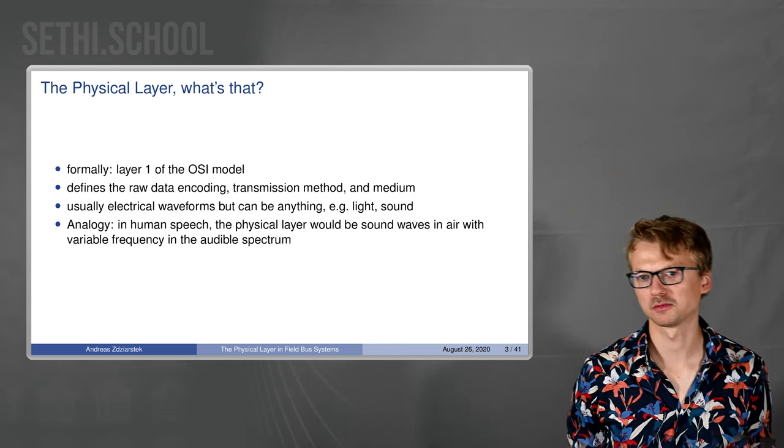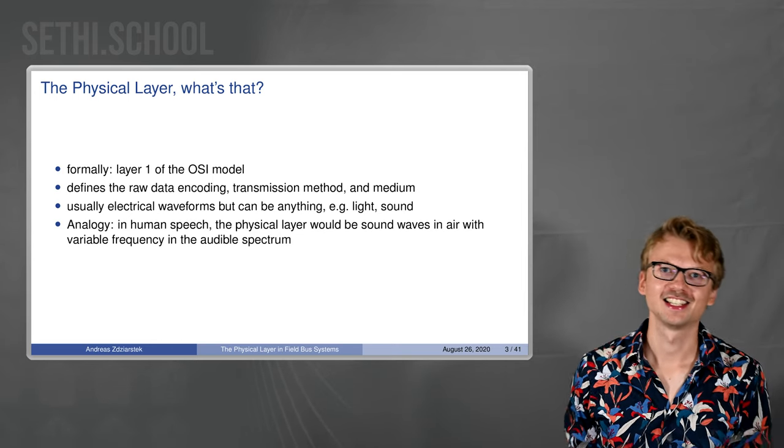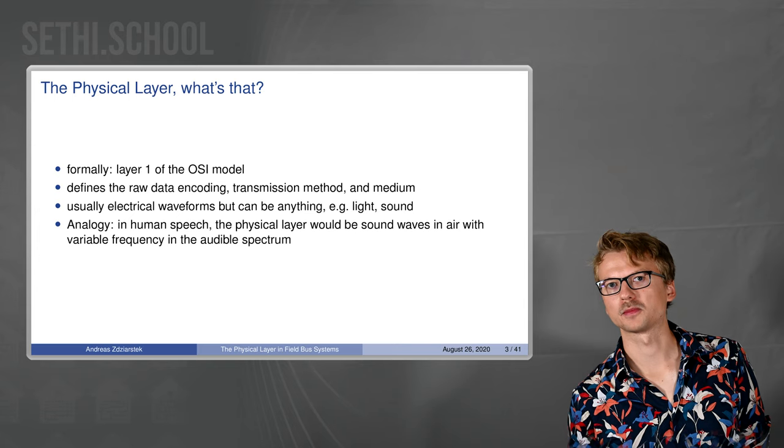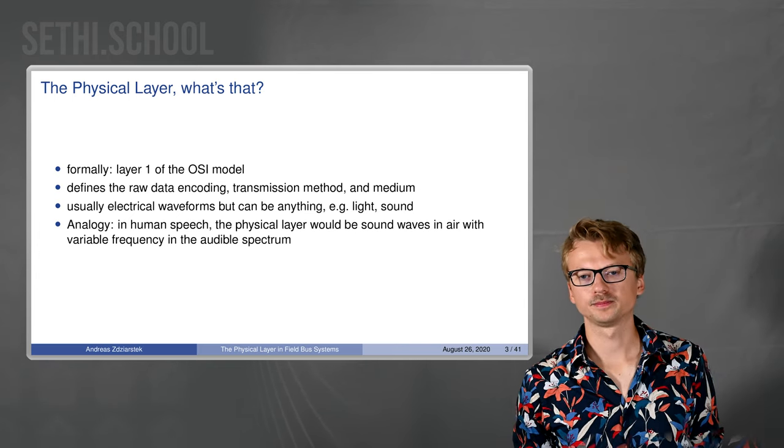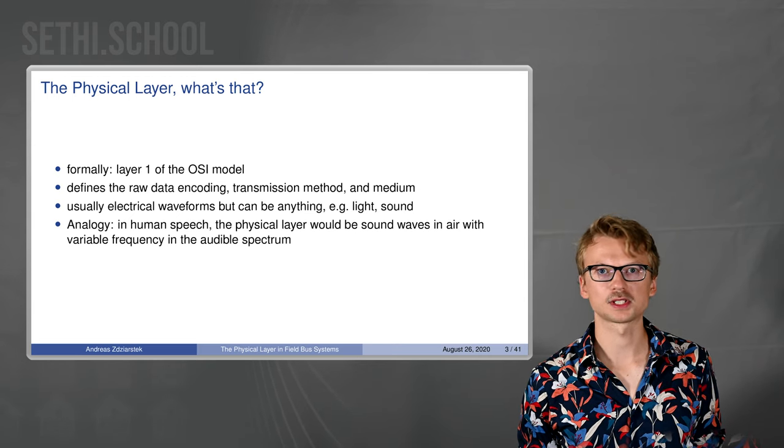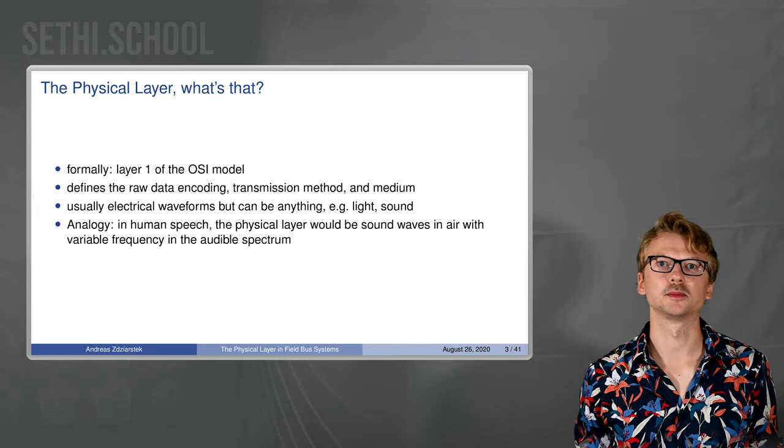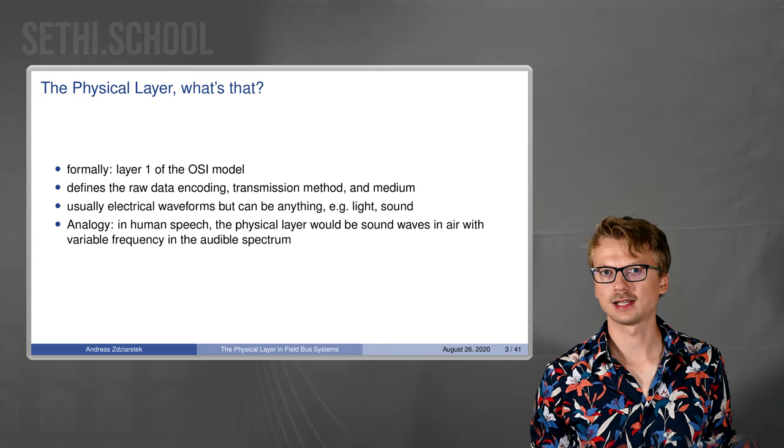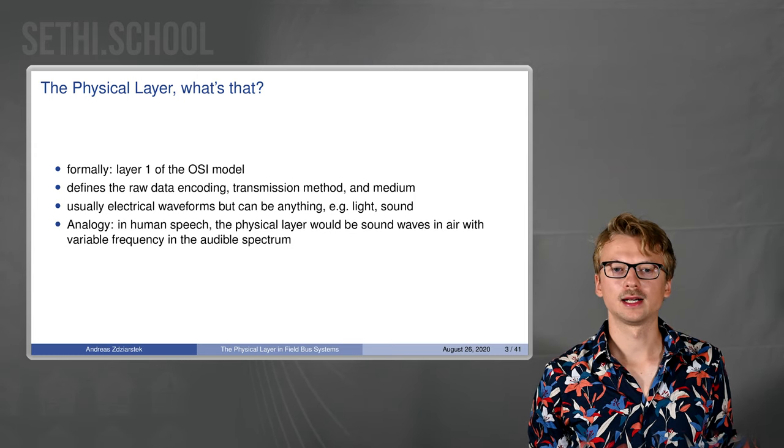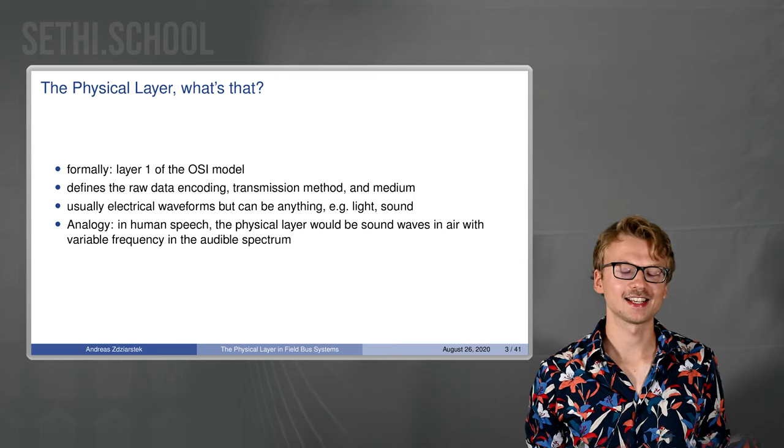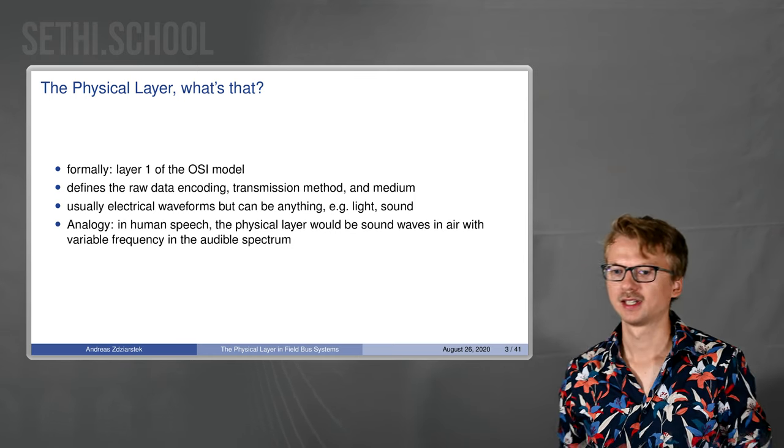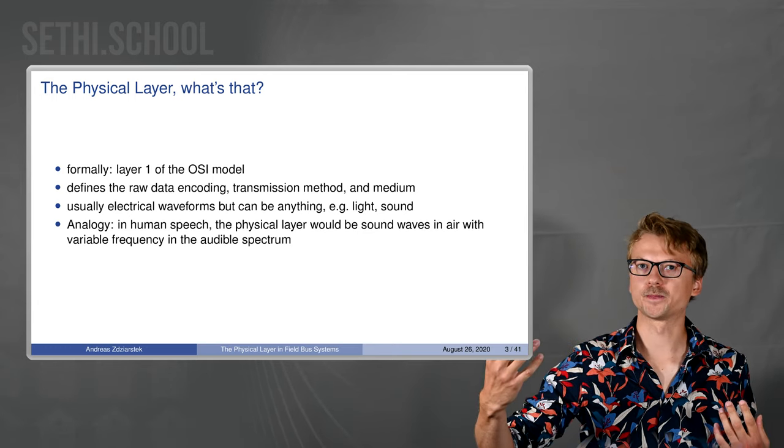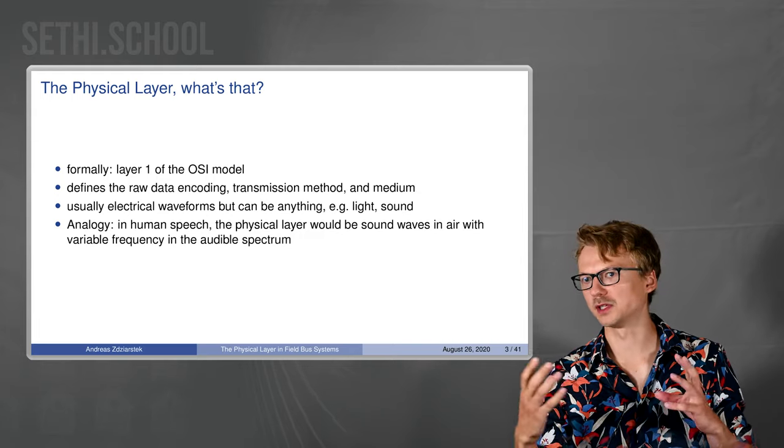So physical layer, what's that? Formally it's layer one of the OSI network model you might have seen at university if you study some computer science related field. What it actually means is just the electric stuff on the wire or on the air or whatever medium you're looking at. It's the layer where the bits get actually transported along the medium. Here's an analogy in human speech. The physical layer would be the sound waves in air coming out of my mouth without the upper interpretation of the words or maybe the phonemes.